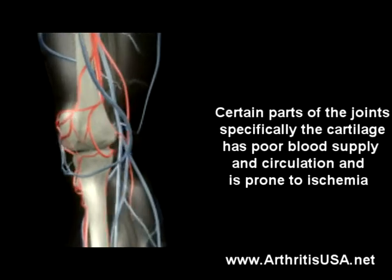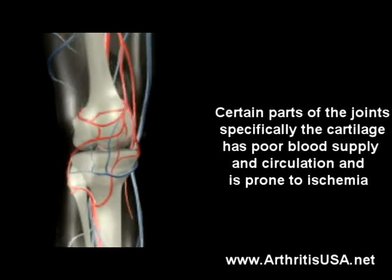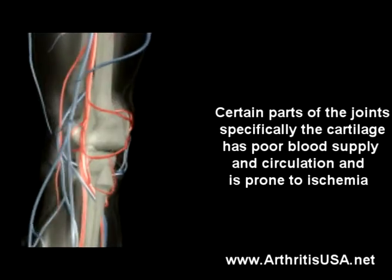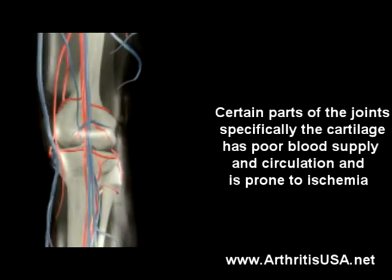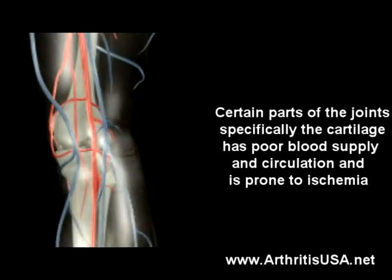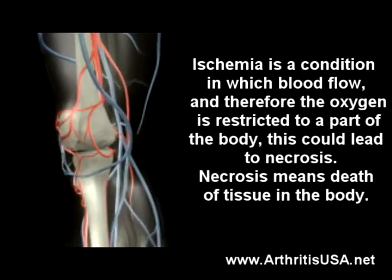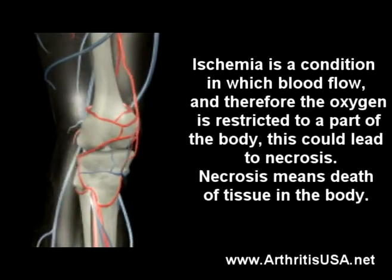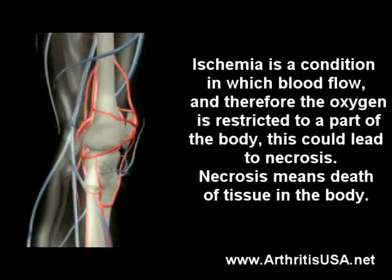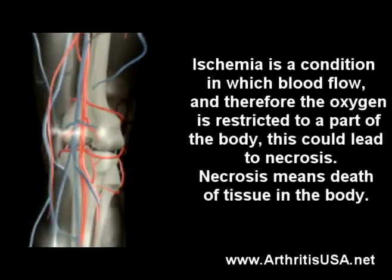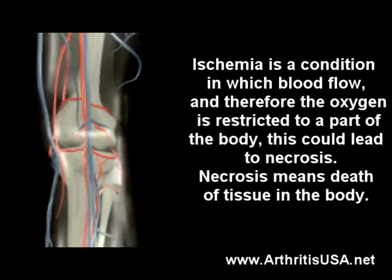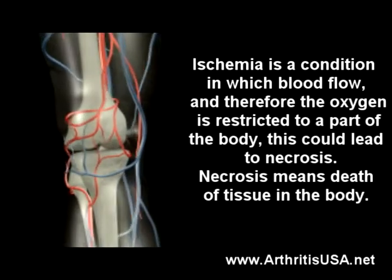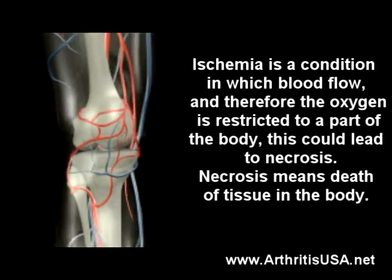Certain parts of the joints, specifically the cartilage, have a poor blood supply and are prone to ischemia. Ischemia is a condition in which blood flow, and therefore oxygen, is restricted to part of the body. This can lead to necrosis, which means the death of tissue inside the body.